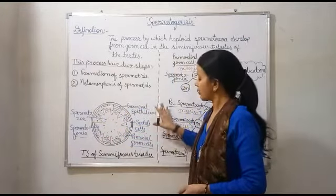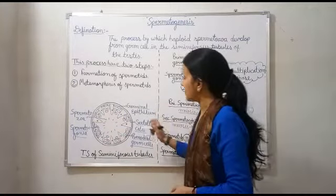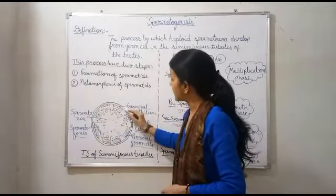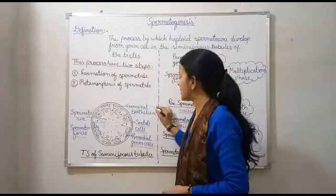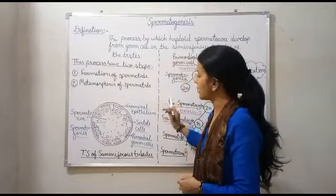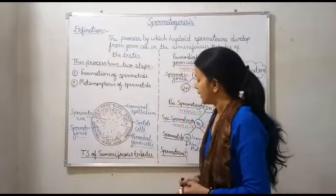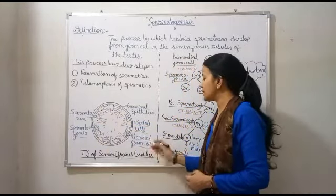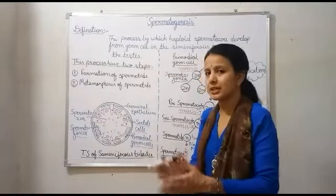यह TS of seminiferous tubules है जो कि आप लोग के सामने show है। Seminiferous tubules के सबसे पहले एक outer line show हो रही है — इसके अंदर यह जो lining है, this is called as germinal epithelium। Germinal epithelium वो है जो germinate करने का work करती है। किसे germinate करती है? Primordial germ cells को।